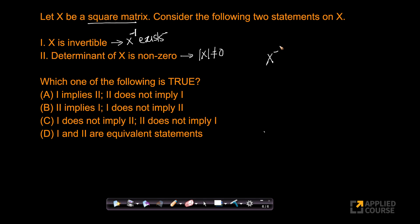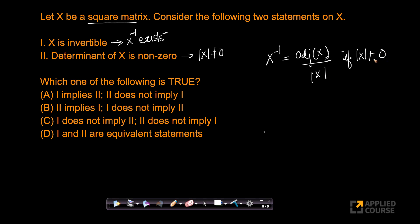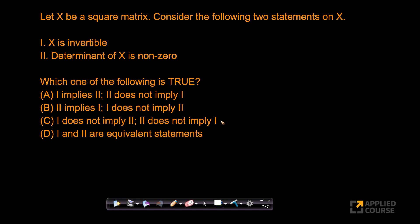We know that the definition of the inverse of X is the adjoint of X divided by the determinant of X. If det of X is not equal to zero, X inverse exists; if det of X equals zero, the inverse does not exist. So both statements are one and the same — if the determinant is non-zero, X is invertible, and if X is invertible, by definition the determinant is non-zero. Hence statements one and two are equivalent, and option D is the right answer. Very simple, very basic question.